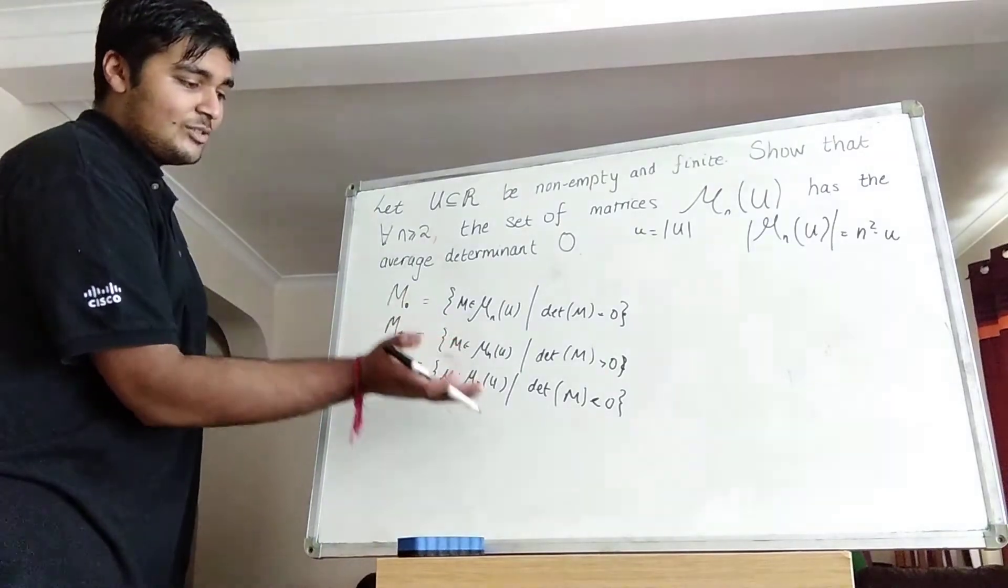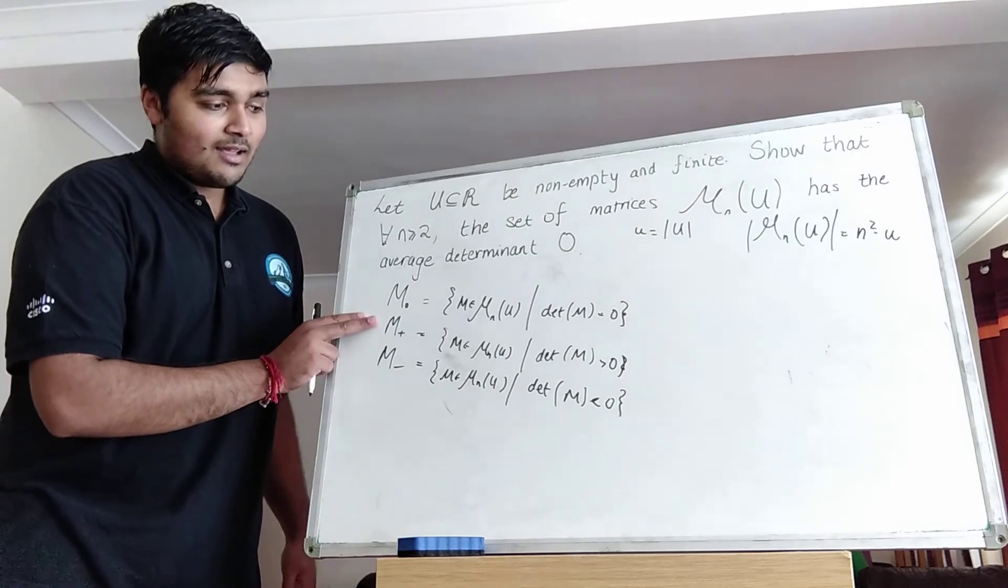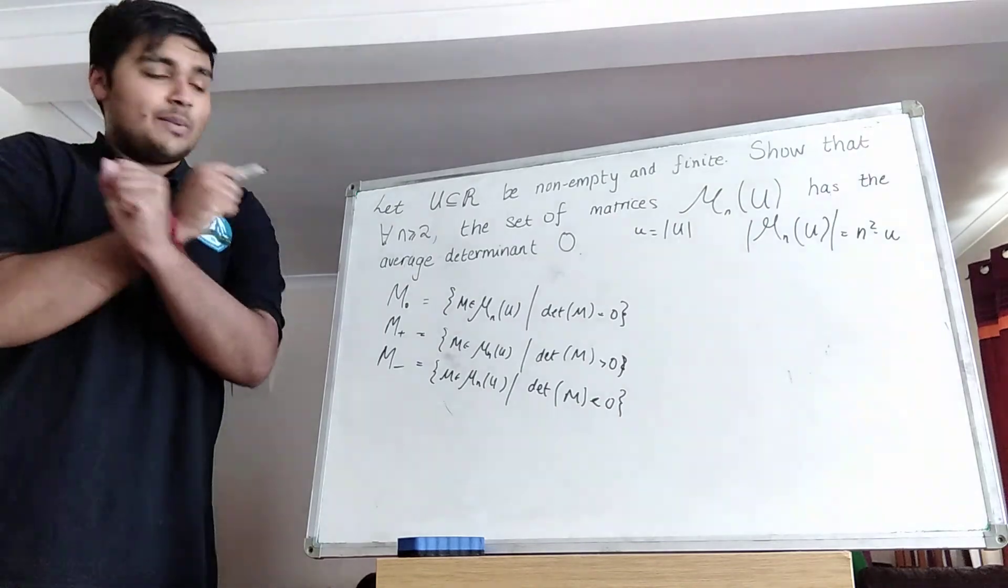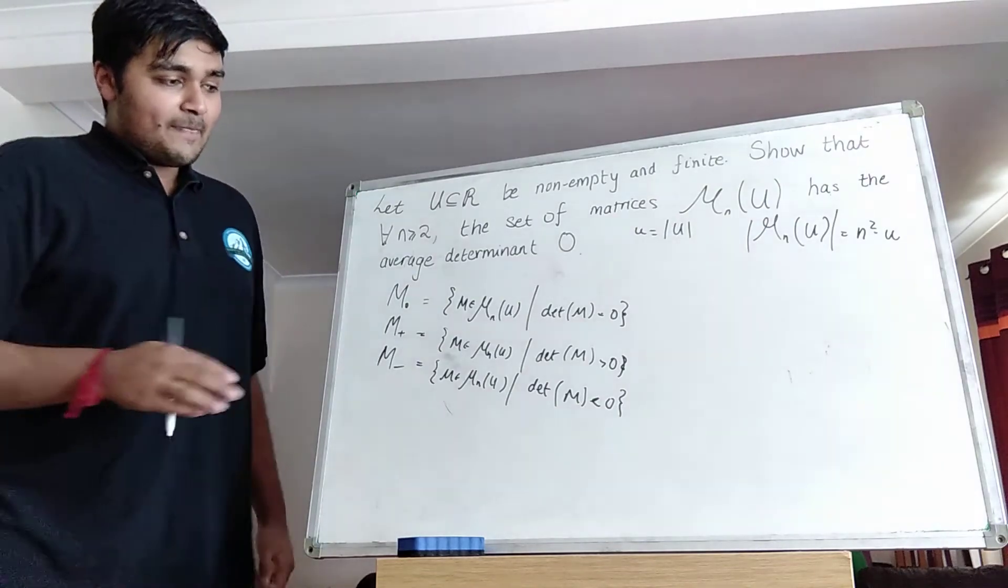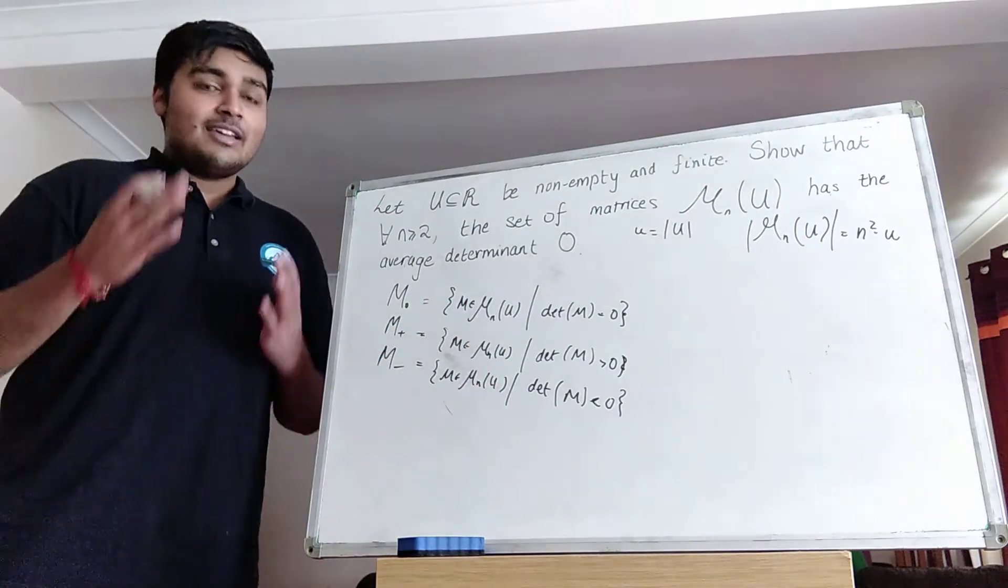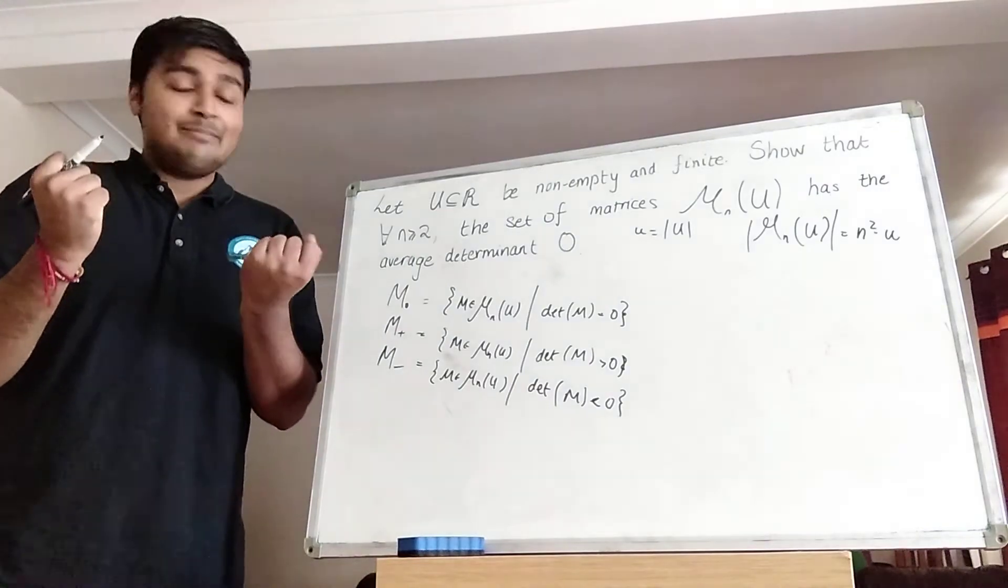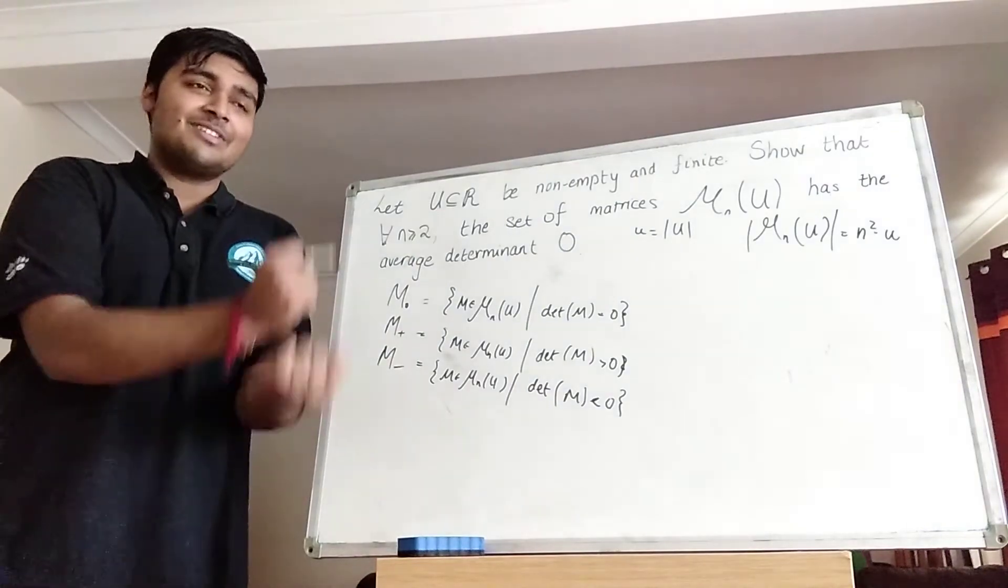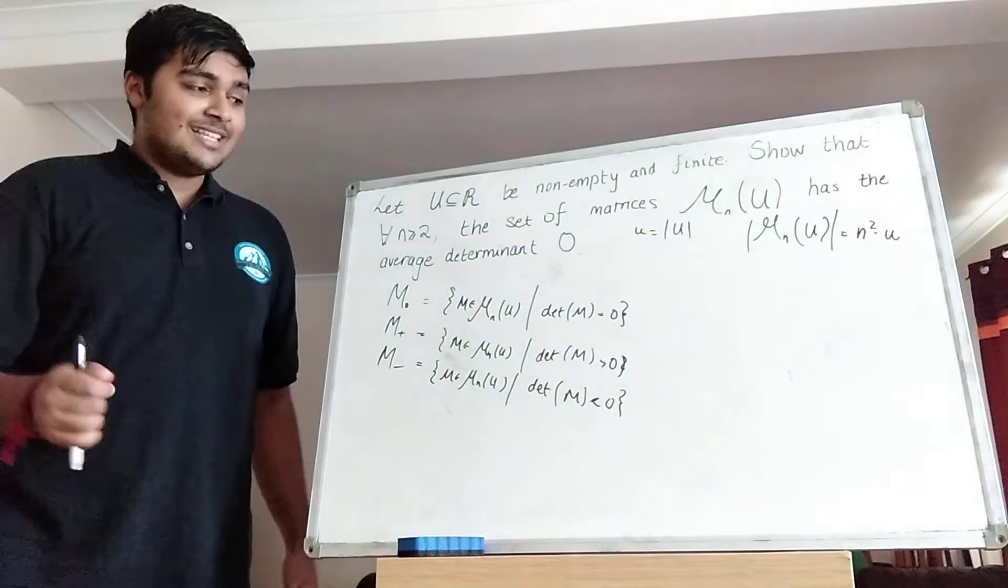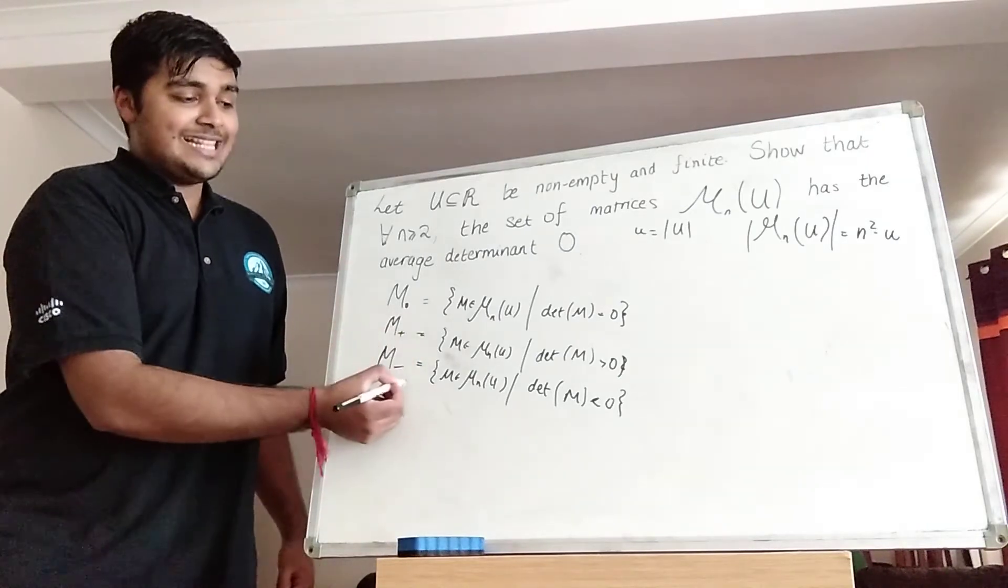But I'm going to show that this cancels with that. Okay so take any matrix in M_plus, i.e. its determinant is greater than zero. And then switch and take any two rows you want and then switch them. Now because the determinant of the matrix is greater than zero it means the matrix is invertible, which means those two rows or columns that you take won't be the same. Because if they were the same then the matrix would have determinant zero. Anyway they're going to be different so when you swap them you're creating a new matrix. And in particular you're putting a minus sign in front of the determinant. So you're getting a matrix in this set here.